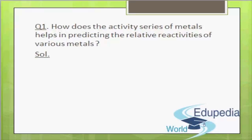In the activity series of metals, the most reactive metal occurs at the top and the least reactive metal occurs at the bottom. The reactivity of a metal decreases on moving from top to bottom. A metal is more reactive than all other metals placed below it, and less reactive than all the metals placed above it in the activity series.